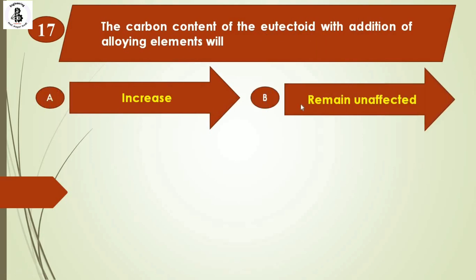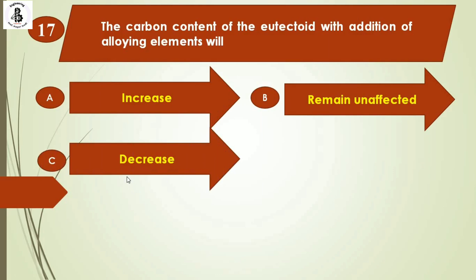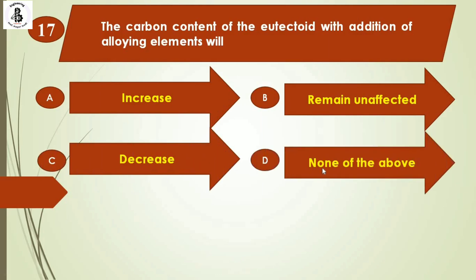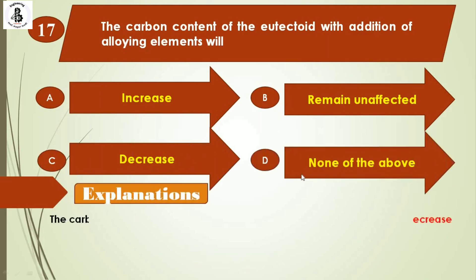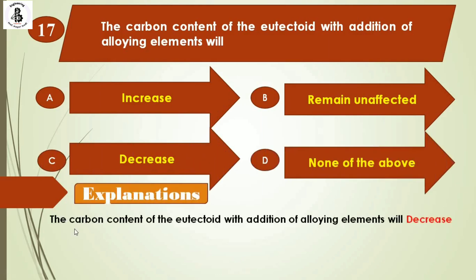Question 17: The carbon content of eutectoid with addition of alloying elements will — Option A: increase, Option B: remain unaffected, Option C: decrease, Option D: none of the above. With the addition of alloying elements, the carbon content of the eutectoid decreases. The right answer is Option C.